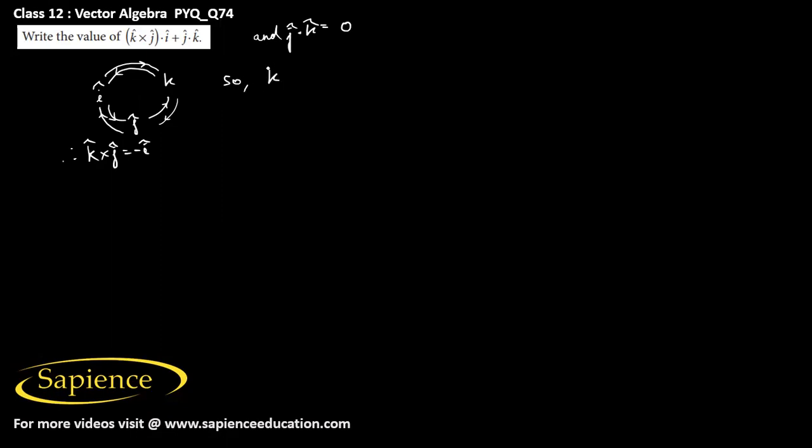Therefore, the value of k cross j dot i cap plus j dot k equals k cross j, which is minus i cap, dot i cap plus j dot k.